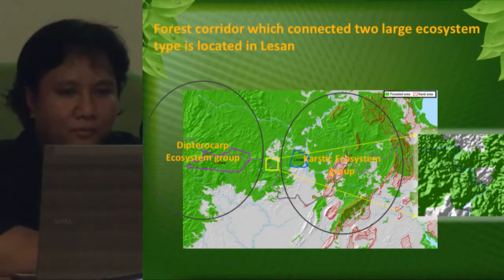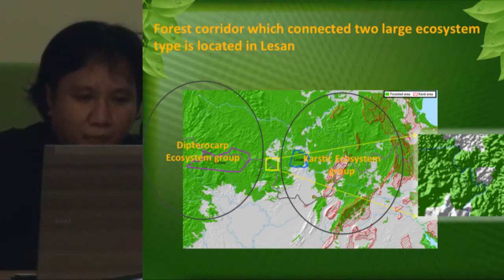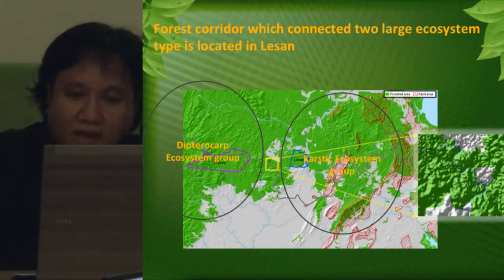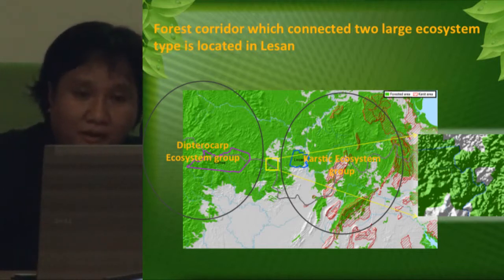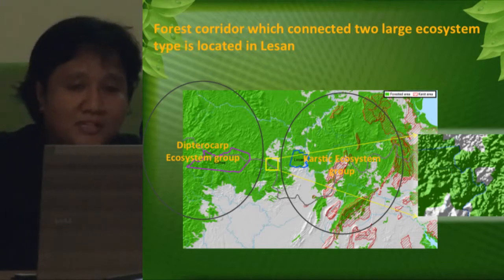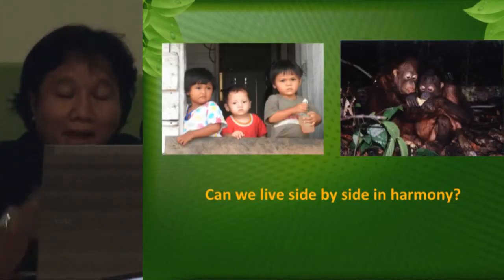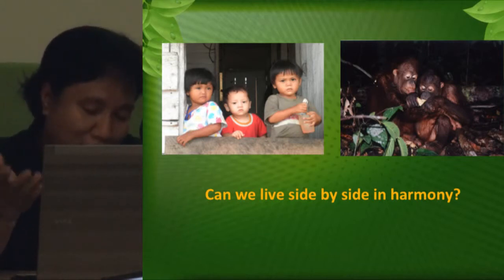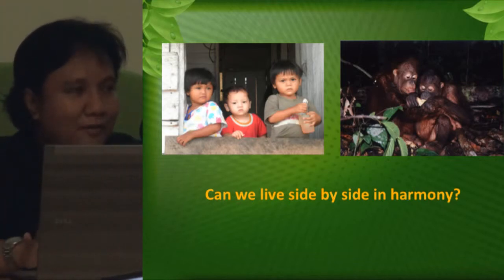The Nature Conservancy is developing three focus areas — in East Kutai, Malinau, and a limestone area where we surprisingly found a group of orangutans. These areas have already been converted to oil palm, mining, and logging concessions. My take-home message: can we live side by side in harmony? I don't know the answer — but it lies with us. Please help us find it. Thank you.